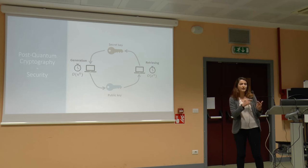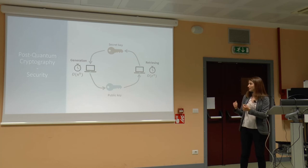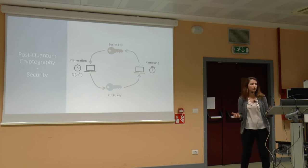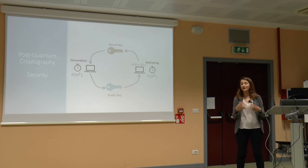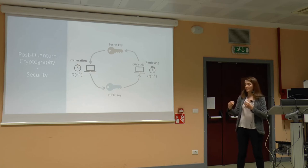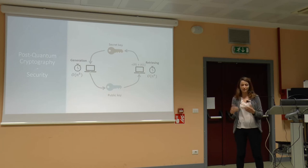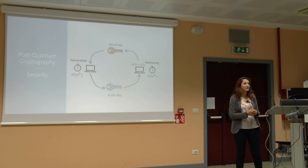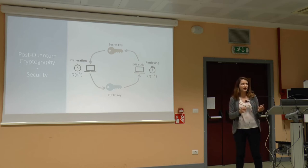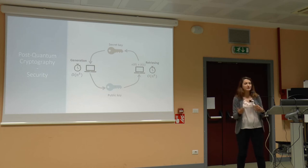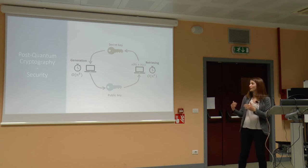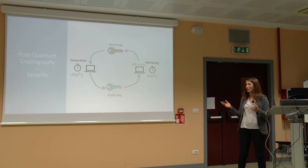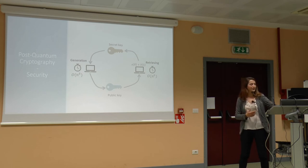Most of the algorithms used now require exponential time to retrieve the secret key from the public key. But the security can be broken by quantum computers, which are supposed to be so powerful that there are algorithms that can run only on those computers and can retrieve the secret keys of some systems adopted today, posing a serious risk for our information. The systems in danger include the well-known RSA, which is based on the hardness of factorizing the product of two large prime numbers — its security can be broken by an algorithm called the Shor algorithm.